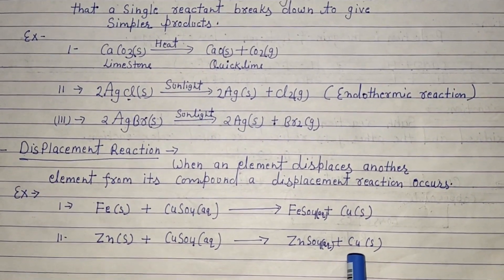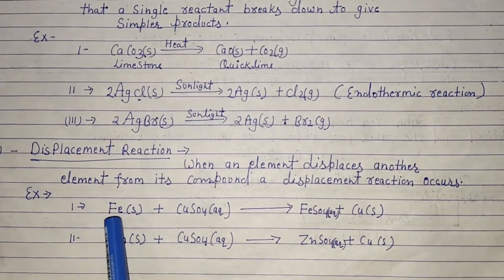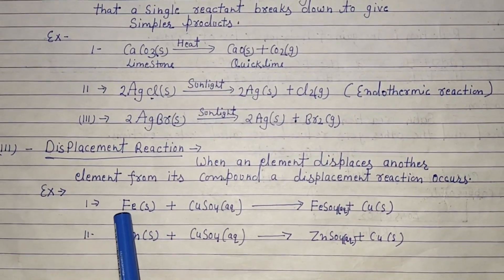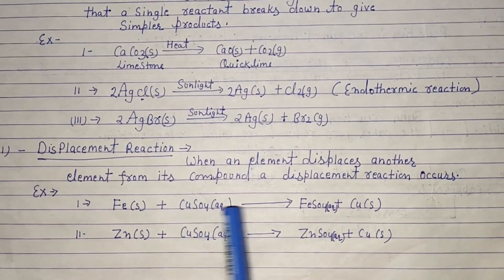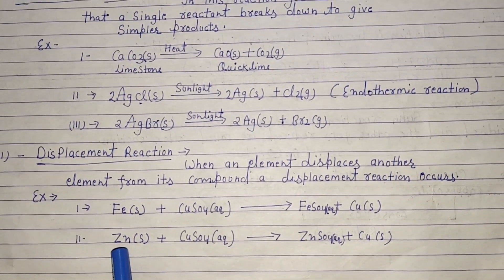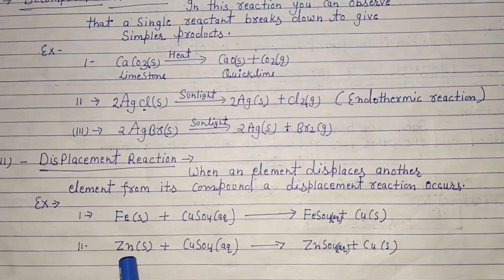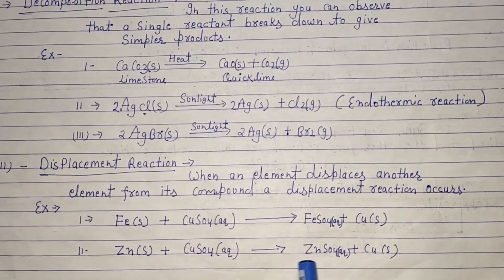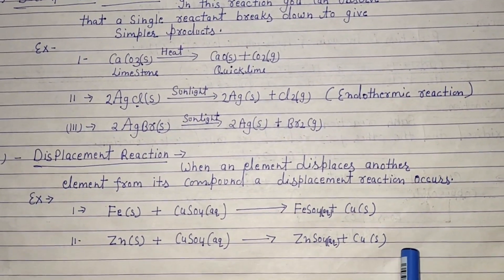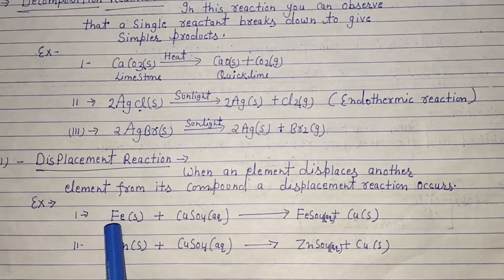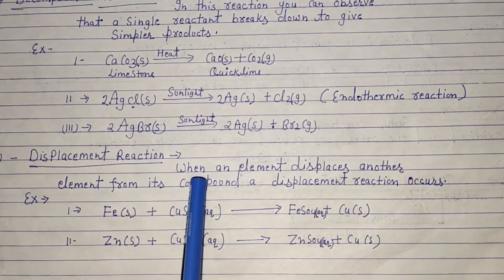Zinc sulfate is formed. In the reactivity series, zinc comes before copper, so zinc displaces copper. Zinc is converted to zinc sulfate and copper is displaced. This is a displacement reaction.